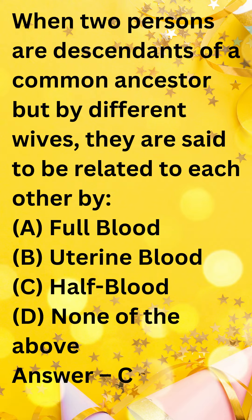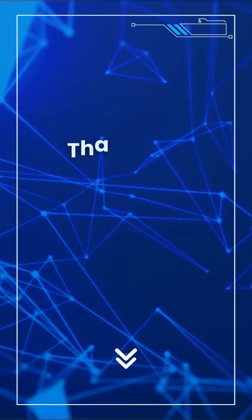Answer: C. When two persons are descendants of a common ancestor but by different wives, they are said to be related to each other by half blood. This is because they share only one parent — their father. In contrast, two people who are related by full blood share both parents. Uterine blood is a term used to describe a relationship between two people who share the same mother but different fathers. Thanks for watching.